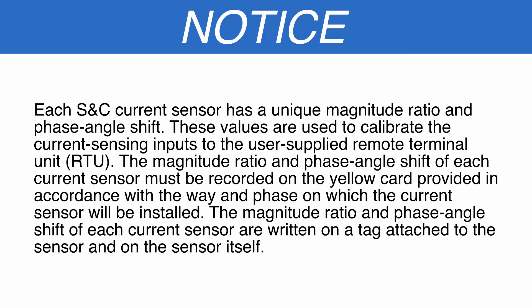Each SNC current sensor has a unique magnitude ratio and phase angle shift. These values are used to calibrate the current sensing inputs to the user supplied remote terminal unit. The magnitude ratio and phase angle shift of each current sensor must be recorded on the yellow card provided in accordance with the way and phase on which the current sensor will be installed. These values are written on a tag attached to the sensor and on the sensor itself.